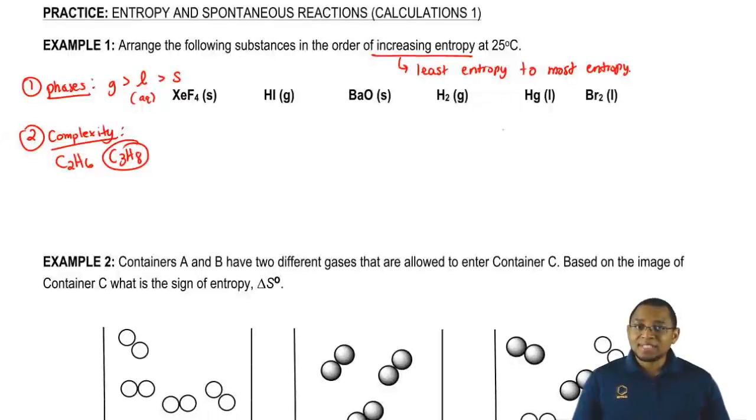Next, we're going to say if they have the same number of atoms, then we look at mass. And you're going to say the greater the mass, the greater the entropy. Remember the whole analogy. We have two cars out of control on a highway, who's going to cause more damage? The Mini Cooper or the Hummer? The Hummer is much larger, has greater mass, therefore it can cause greater damage.